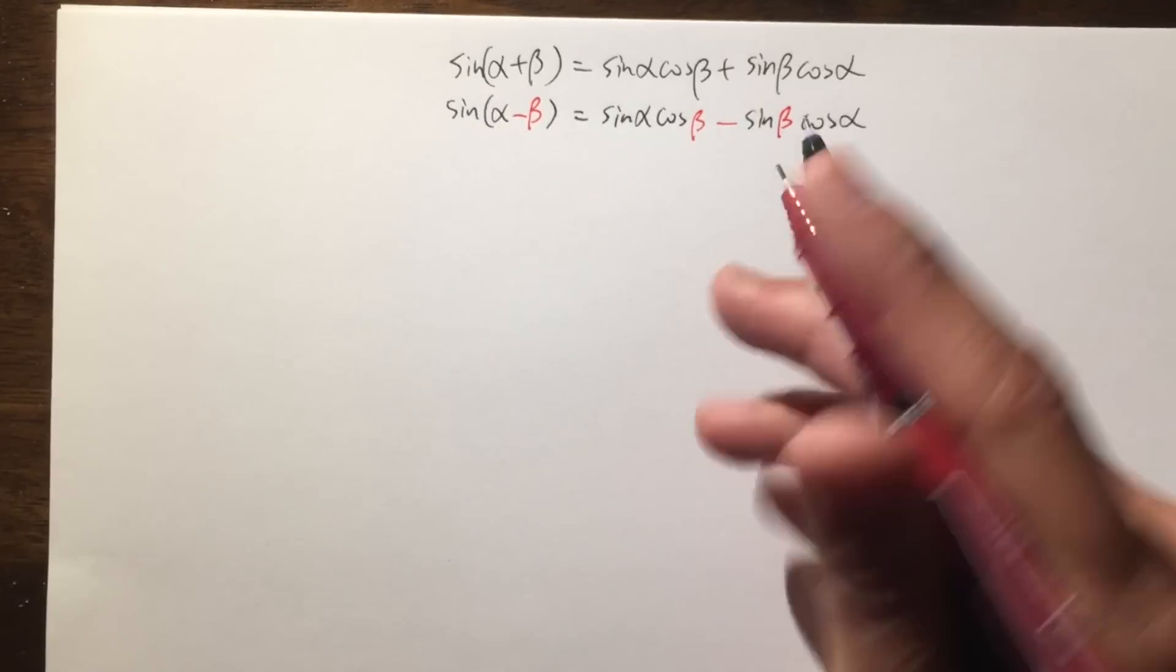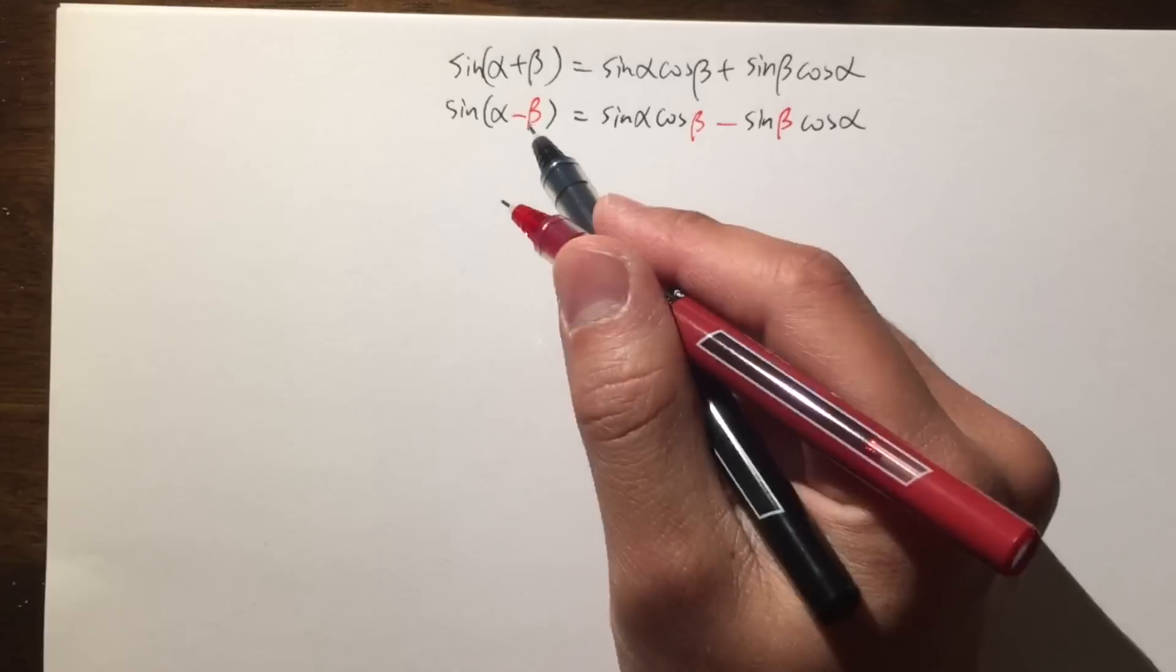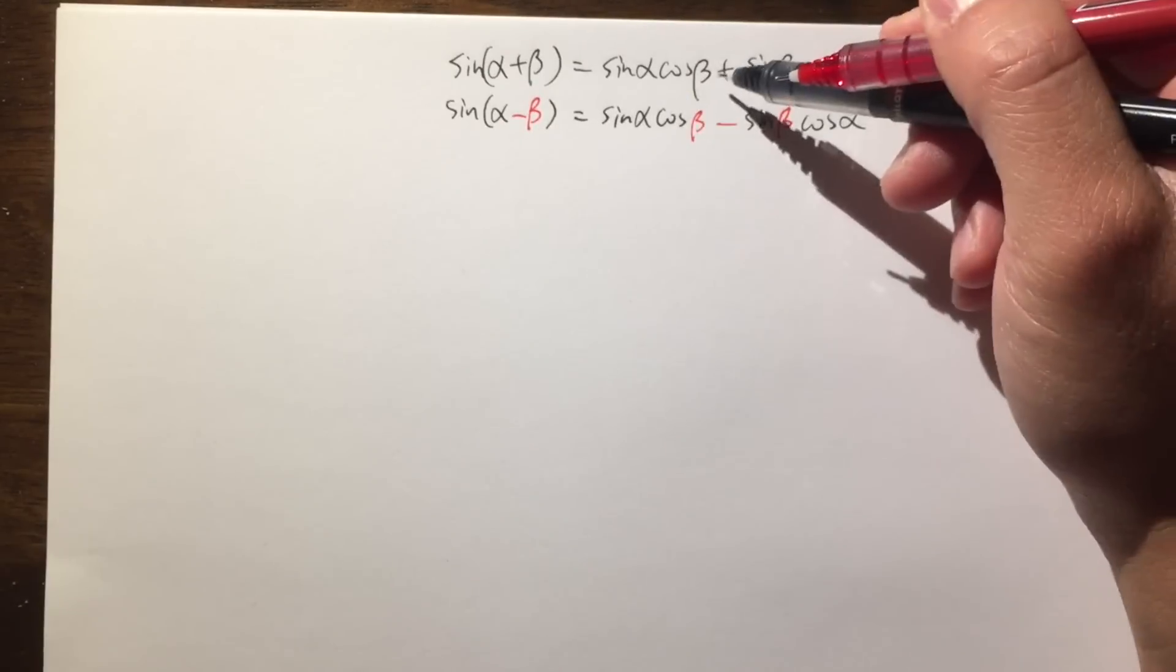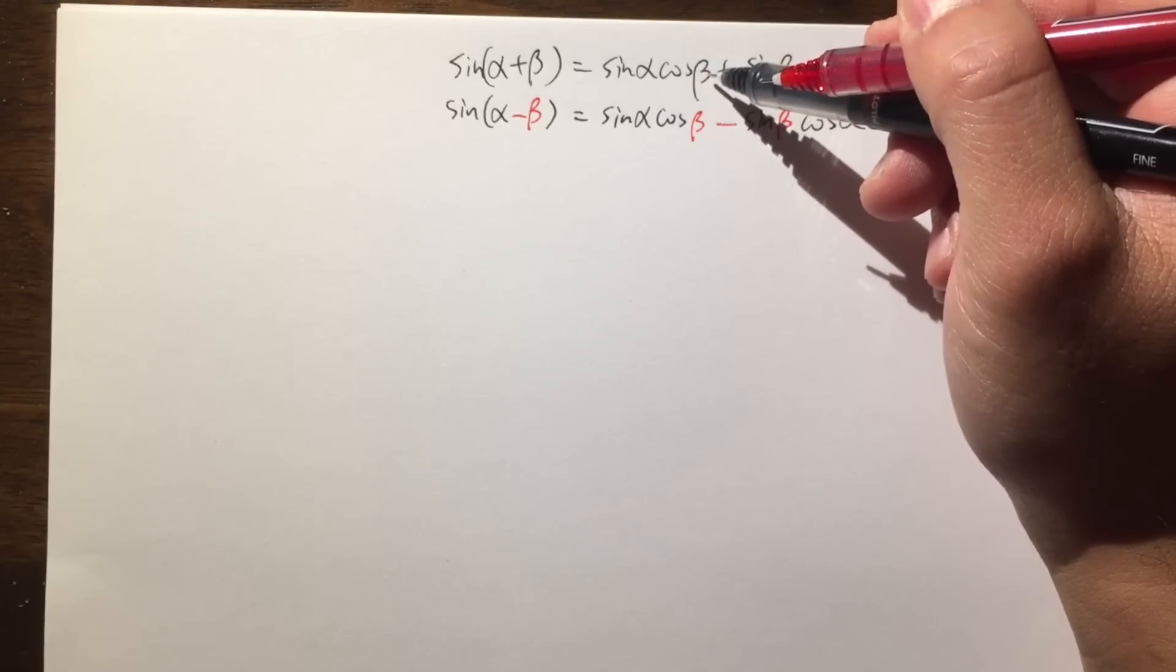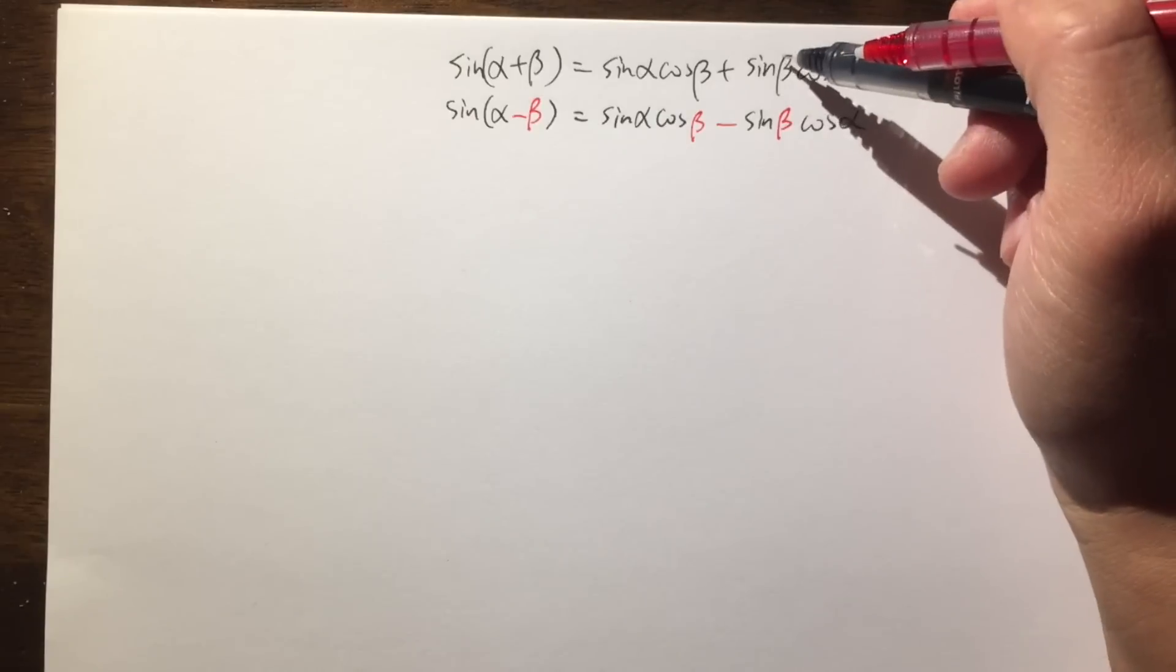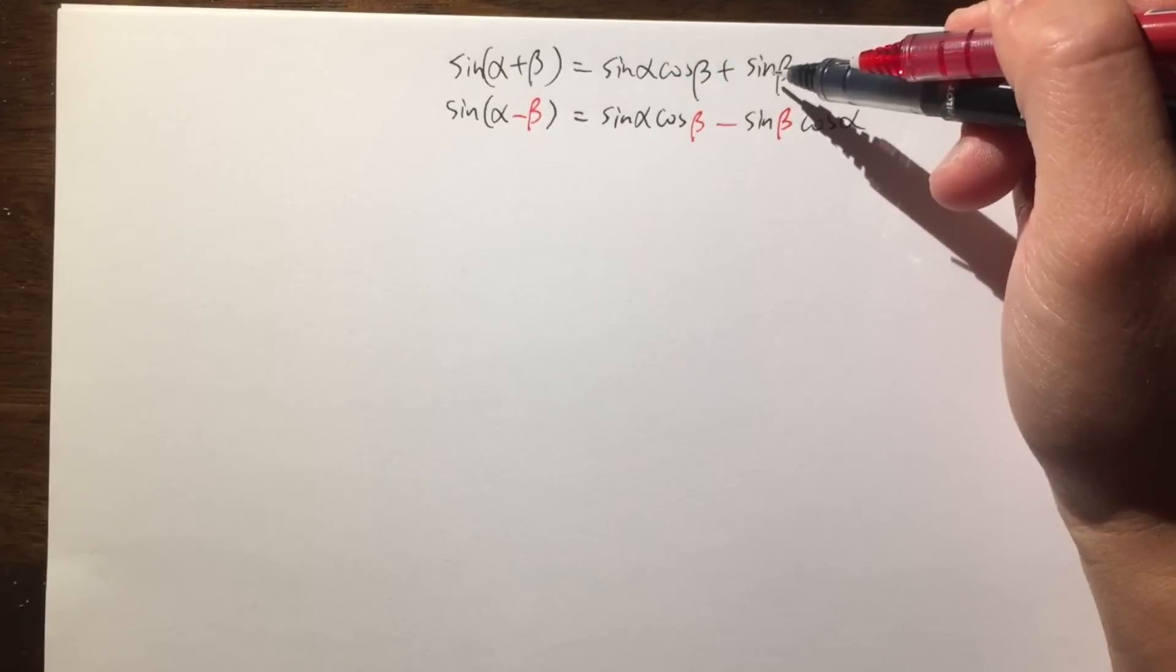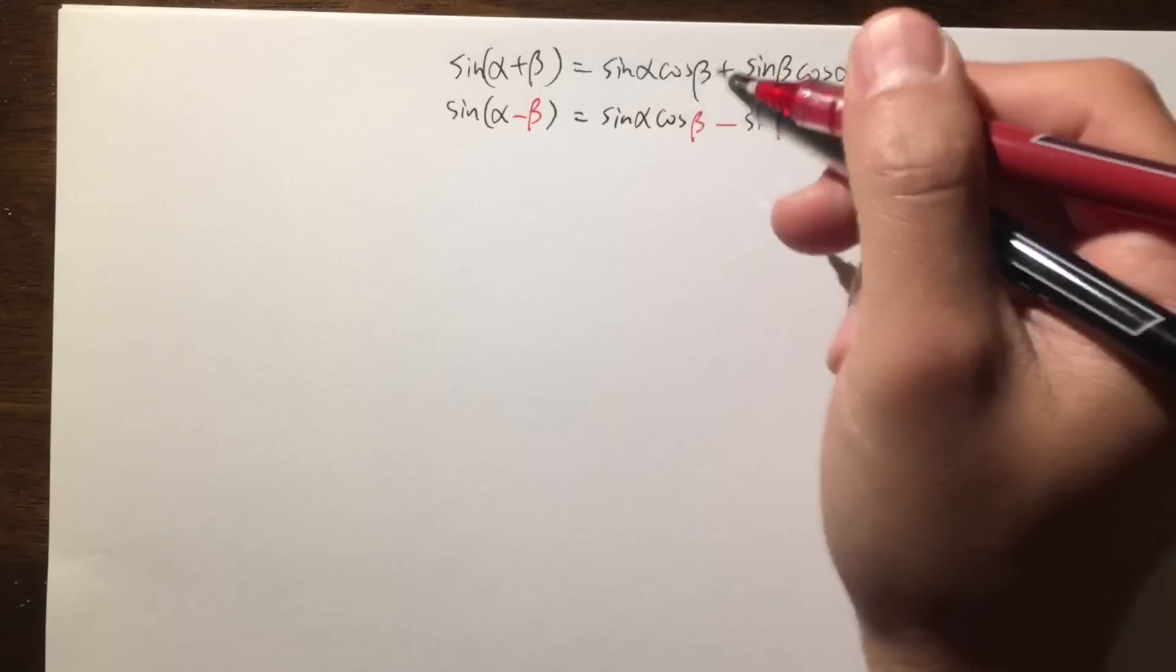And if you want to see why the first one is true, you can check out the video in the description. And for the second one, you can just simply plug in negative beta into the original beta. And you see cosine is an even function. Therefore, cosine of negative beta is the same as cosine of positive beta. But sine is an odd function. So sine of negative beta becomes negative sine beta right here. That's why it's a subtraction.